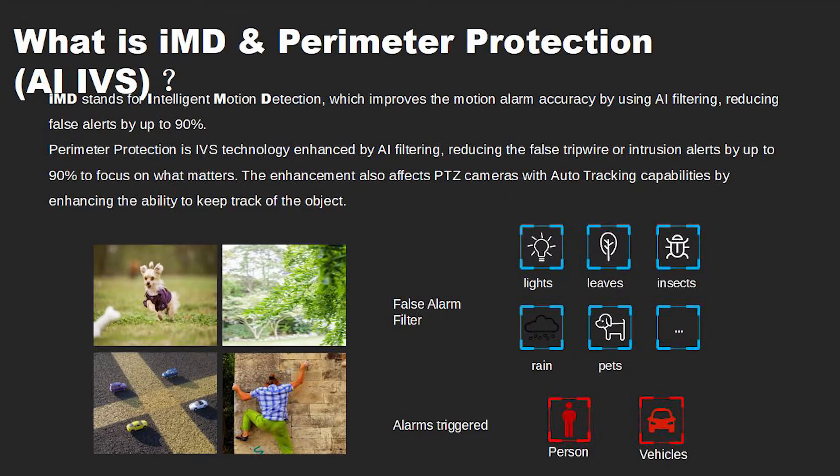IMD stands for Intelligent Motion Detection, which improves the motion alarm accuracy by using AI filtering, reducing false alerts by up to 90%. Perimeter protection is IVS technology enhanced by AI filtering, reducing the false tripwire or intrusion alerts by up to 90% to focus on what matters.